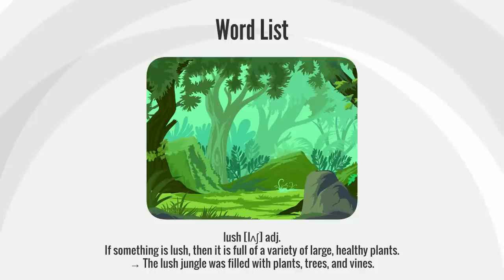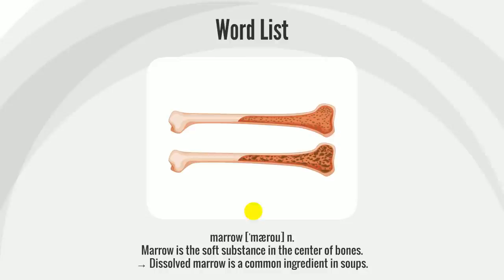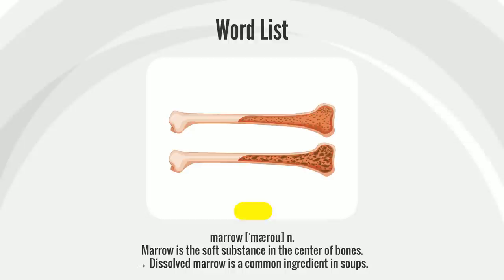If something is lush, then it is full of a variety of large, healthy plants. The lush jungle was filled with plants, trees, and vines.